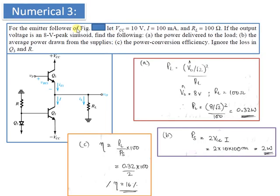The third numerical says: for an emitter follower with VCC equal to 10 V, I equal to 100 milliamps, RL equal to 100 ohms, and output voltage of 8 V peak sinusoid, find: part A, power delivered to the load; part B, average power drawn from the supplies; part C, power conversion efficiency. For part A, PL equals Vout(peak) divided by root 2, the whole squared divided by RL. With Vout(peak) equal to 8 V, this gives power delivered to the load equal to 0.32 watts.